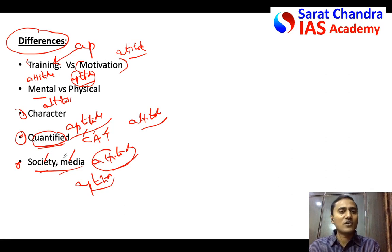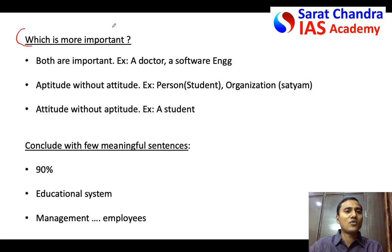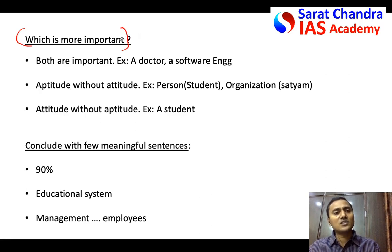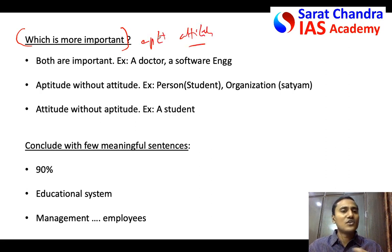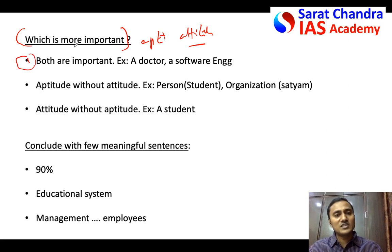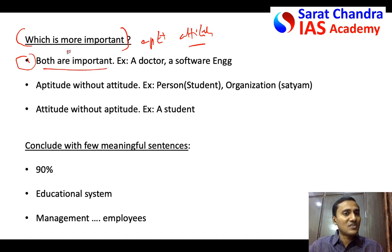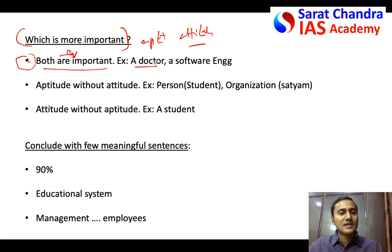Those are some of the differences. Now for the second part — which is more important? I would suggest that generally in this kind of question, try to be neutral. Tell that both are equally important, and in the conclusion, if you want, you can say that one is slightly more important than the other. But don't write extreme statements like 'aptitude is not required at all.' Give examples to convince the evaluator that you have logic behind your answer. I would say both attitude and aptitude are important.